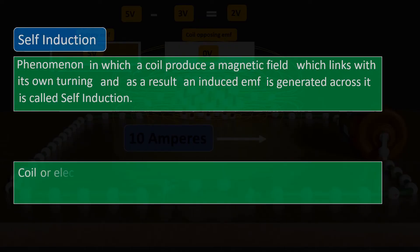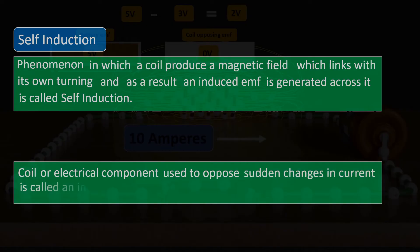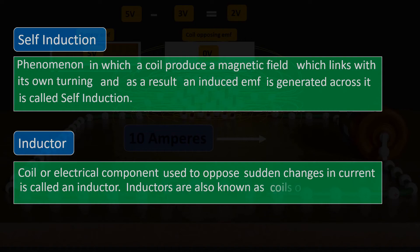And such a coil or electrical component used to oppose sudden changes in current is called an inductor. Inductors are also known as coils or chokes.